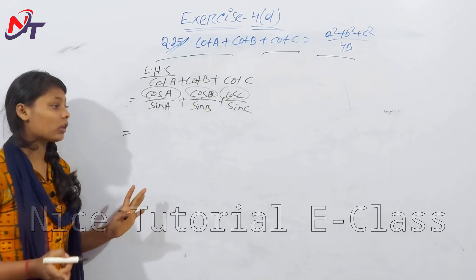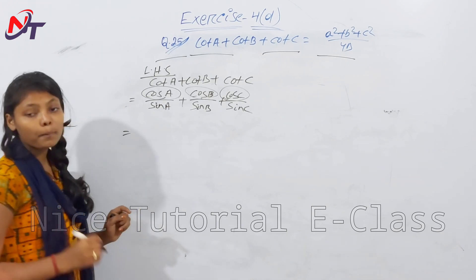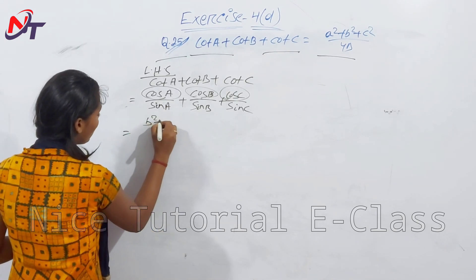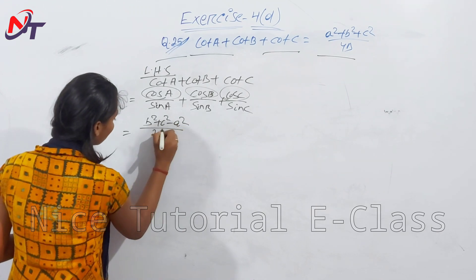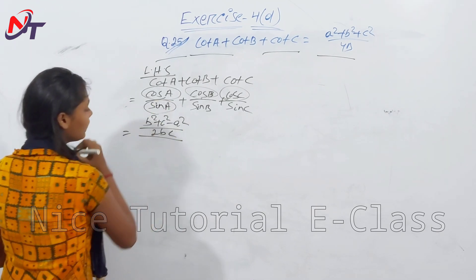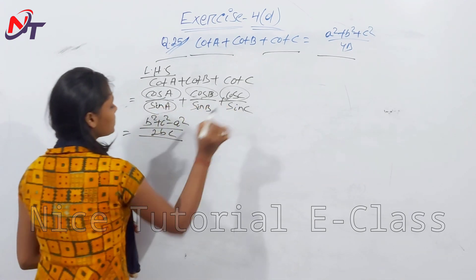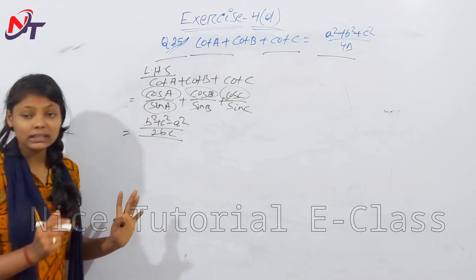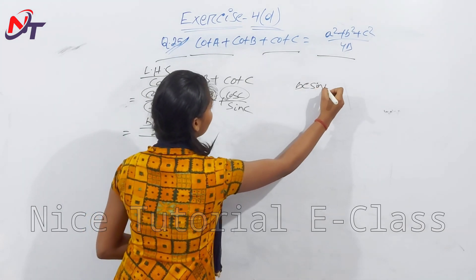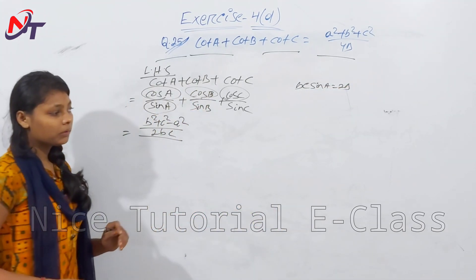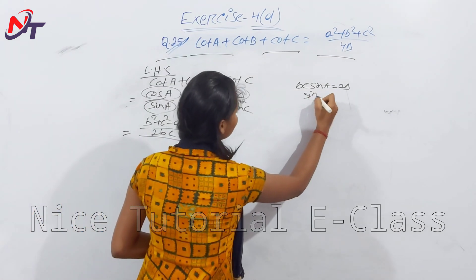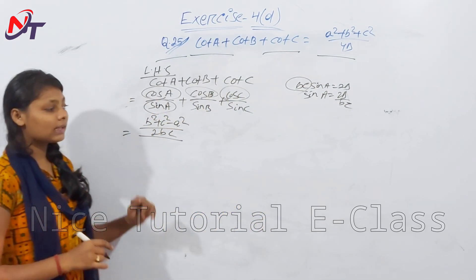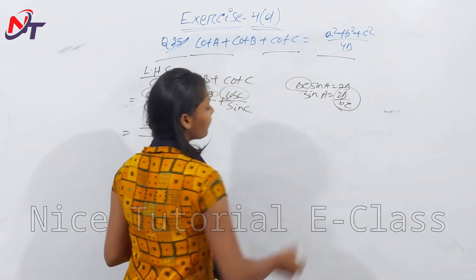For cos A, we use the cosine rule: cos A = (b² + c² - a²)/(2bc), divided by sin A. Using the area formula: bc·sin A = 2Δ, so sin A = 2Δ/(bc).